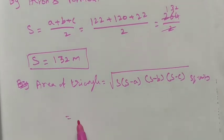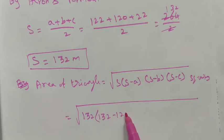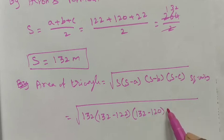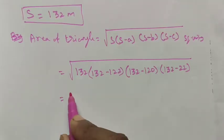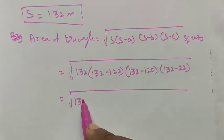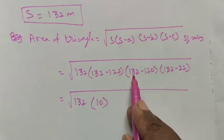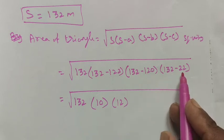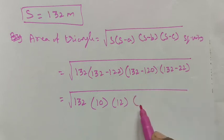In this formula, S is equal to 132, then 132 minus A which is 122 equals 10, 132 minus B which is 120 equals 12, and 132 minus C which is 22 equals 110.